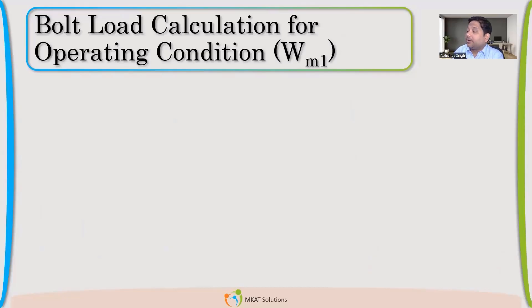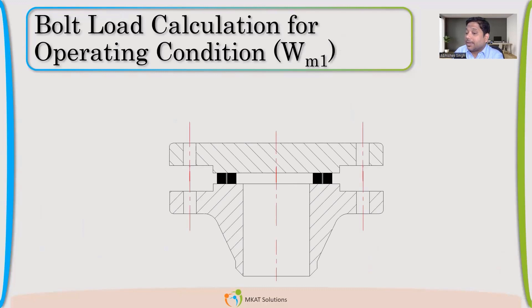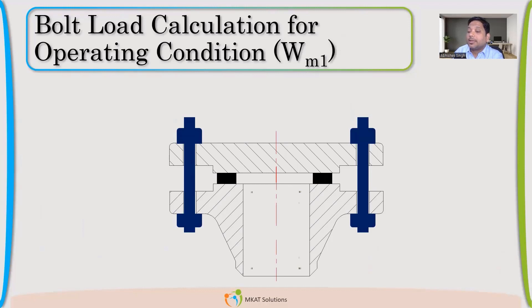Now let us calculate and let us take the operating condition first. What is my operating condition? I have a bolted connection, flange, blind flange. There is gasket and pressure applied. This is my operating condition. How much load of the bolt I need to contain this pressure? It's a very simple calculation.